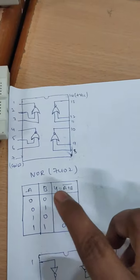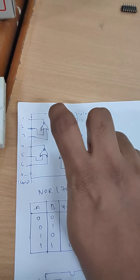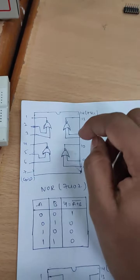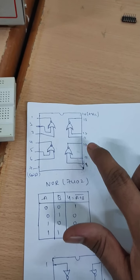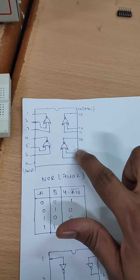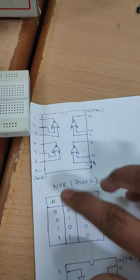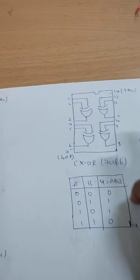And this is NOR gate. Here in this NOR gate, pin number 1 is output, pin number 2, 3 are inputs. So, the structure is like this. We need to connect the IC over the breadboard like this and we need to check the output for different inputs. And this is the pin configuration for XOR gate.